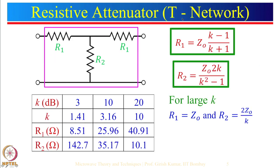Let us now look at another network: the T network. Here attenuation is obtained using three resistors in a T configuration. Series resistance is R1 and shunt resistance is R2. Analysis can be done by writing a current equation and finding the voltage, or by using ABCD parameters — dividing the network into three parts, multiplying the three ABCD matrices, and then applying the conditions S11 = 0 and S21 = 1/k to obtain expressions for R1 and R2.